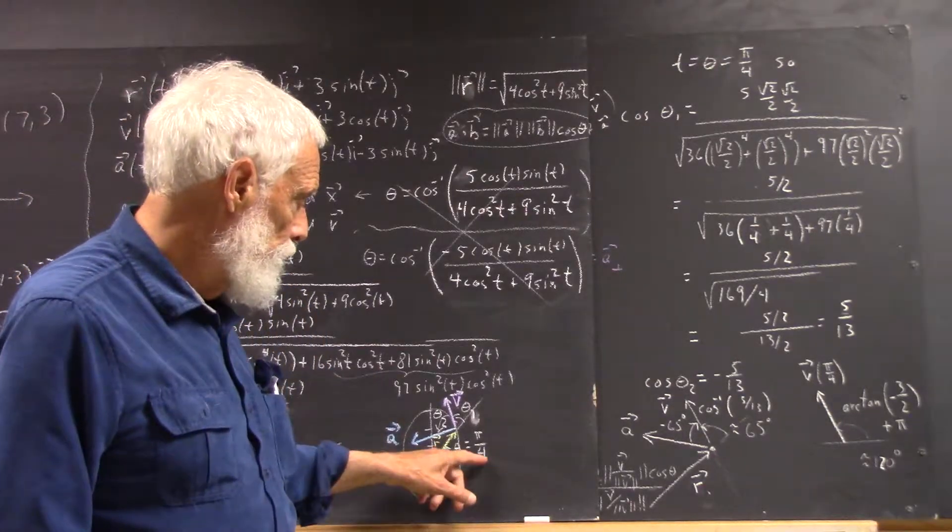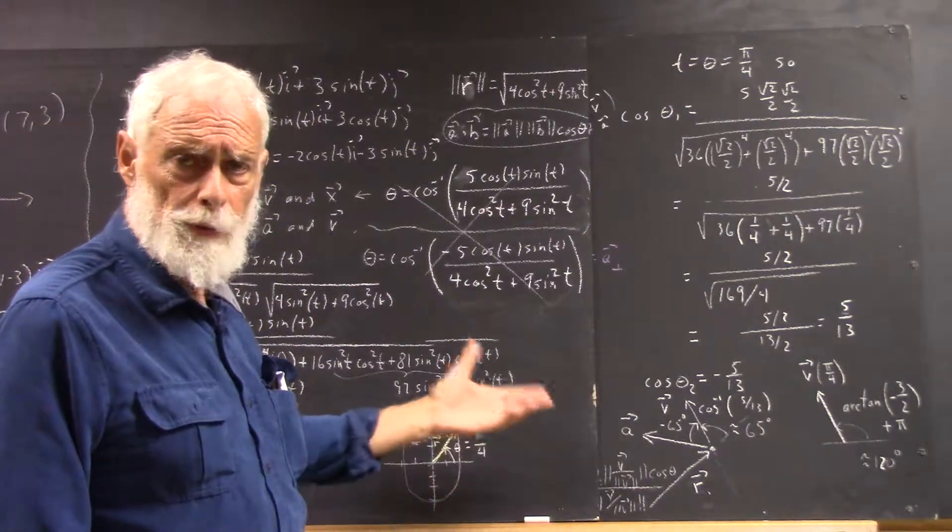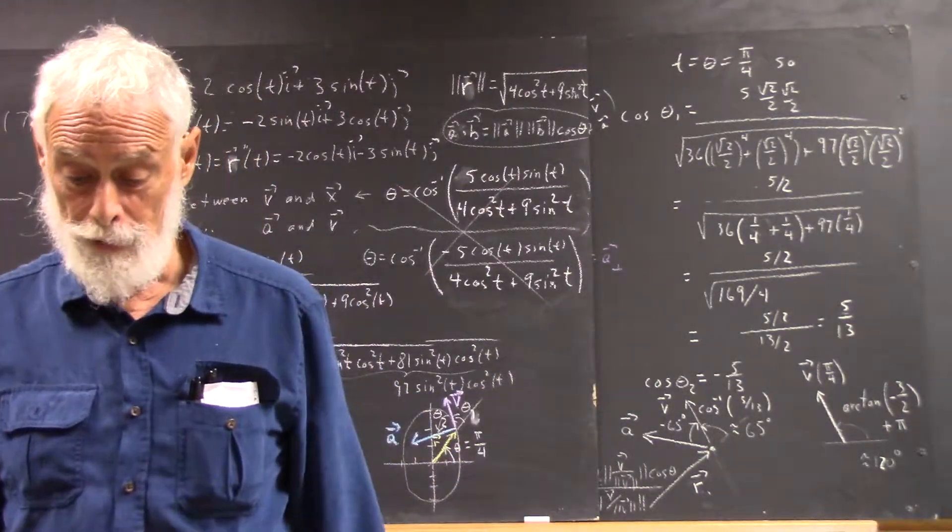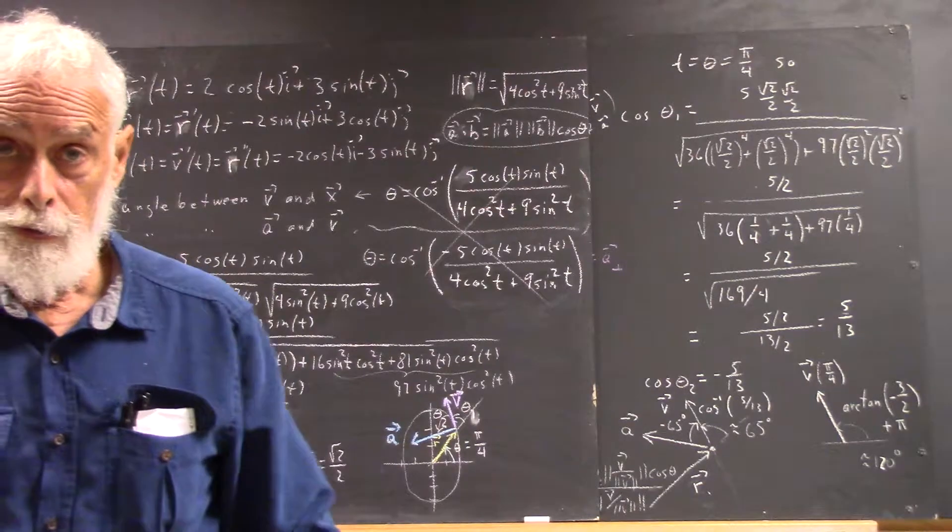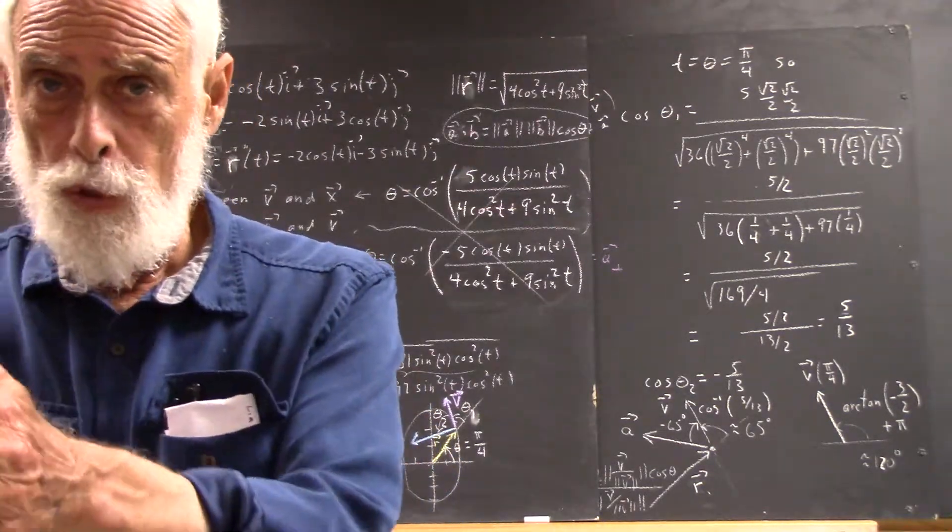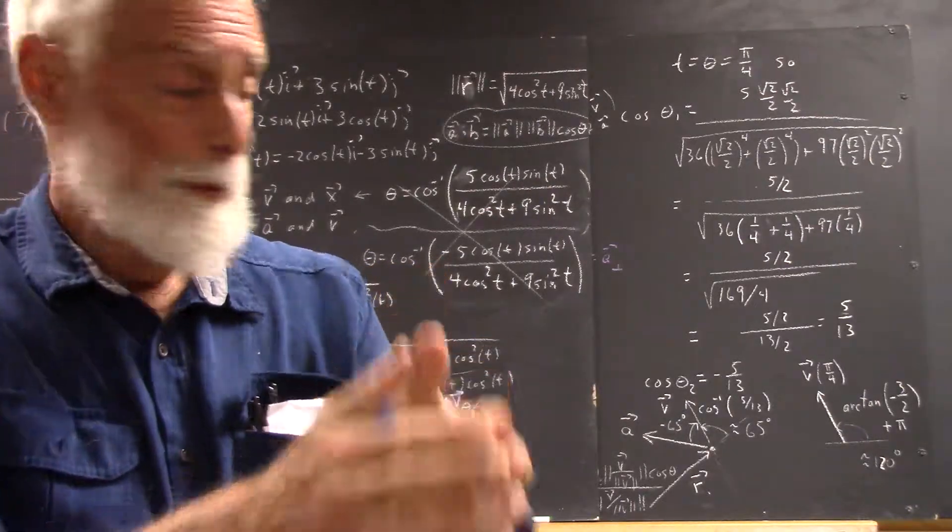Now, by the time t goes from zero to π over four, and π over four is about 0.8 seconds, about the time it takes me to make a step, I will have come around here and curved, so now I'm pointing not in the positive y-direction, but over this way a little bit.